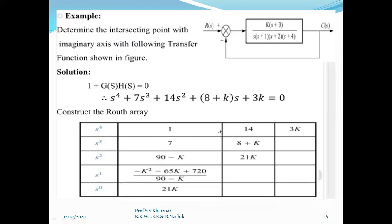Determine the intersecting point with the imaginary axis for the given transfer function. The poles are at s = 0, −1, −2, −4 and there is one zero at s = −3. Writing the characteristic equation 1 + G(s)H(s) = 0, we get a fourth-order equation. Constructing the Routh array with highest power s⁴, the coefficients are 1, 7, 14, (8+k), and 3. These are arranged row by row, giving intermediate values of (90 − k) and 21k in the array.